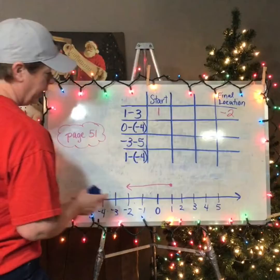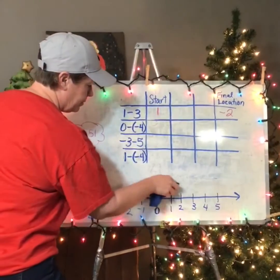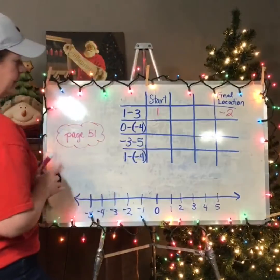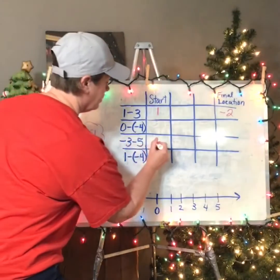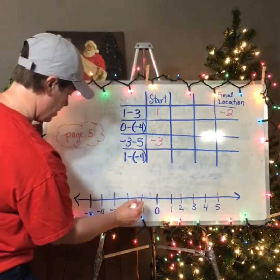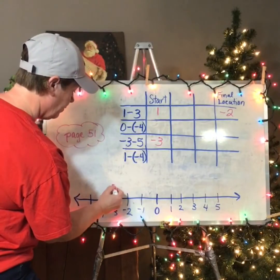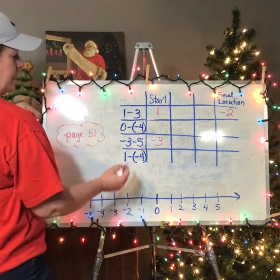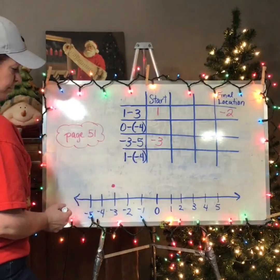The next one — let's head to the third one. I'm going to start at negative three, so I'm going to go to negative three here. And if I take away five more,